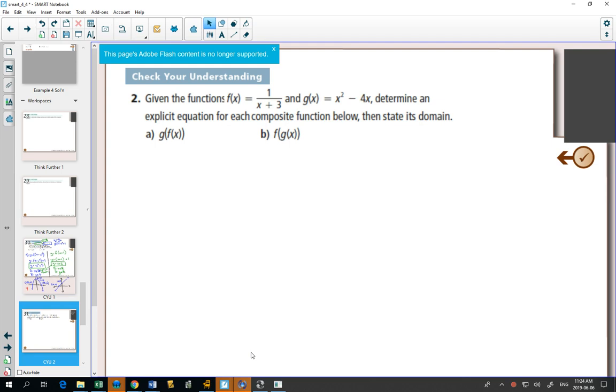Example 2 is similar. We're still doing composition of function. We want to find the explicit equation each time because that's going to help us find the domain.